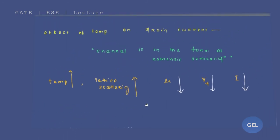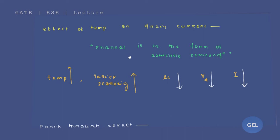Next important point: the effect of temperature on drain current. The channel in an N-MOSFET or P-MOSFET, whether N-channel or P-channel, always behaves as an extrinsic semiconductor. If you increase temperature, there will be an increment in lattice scattering, due to which mobility decreases, drift velocity also decreases, and since drain current directly depends on drift velocity, the current value also decreases. So with an increment in temperature, drain current decreases.